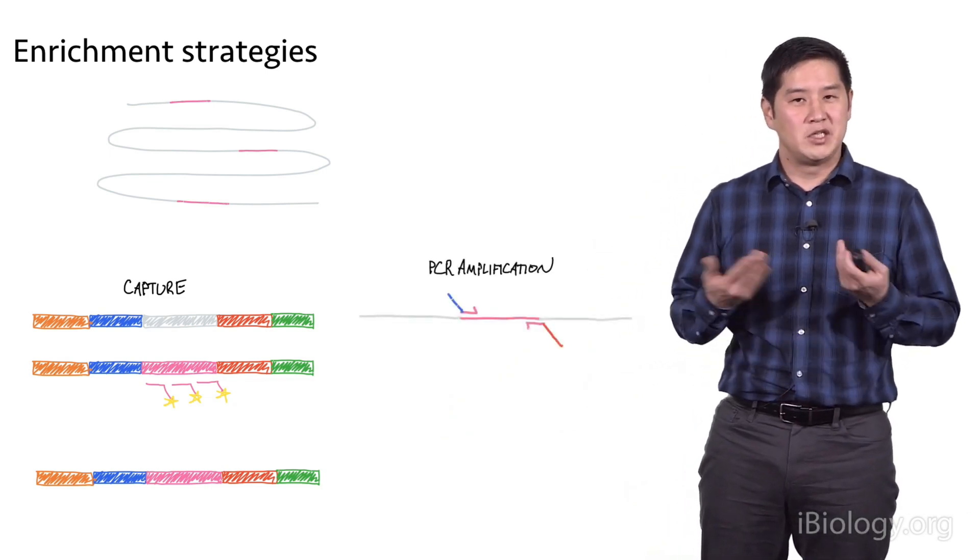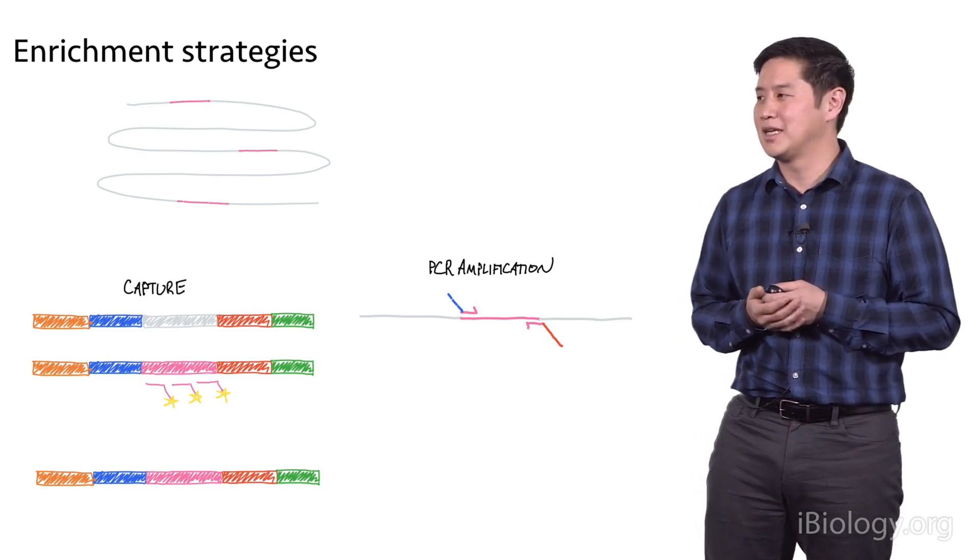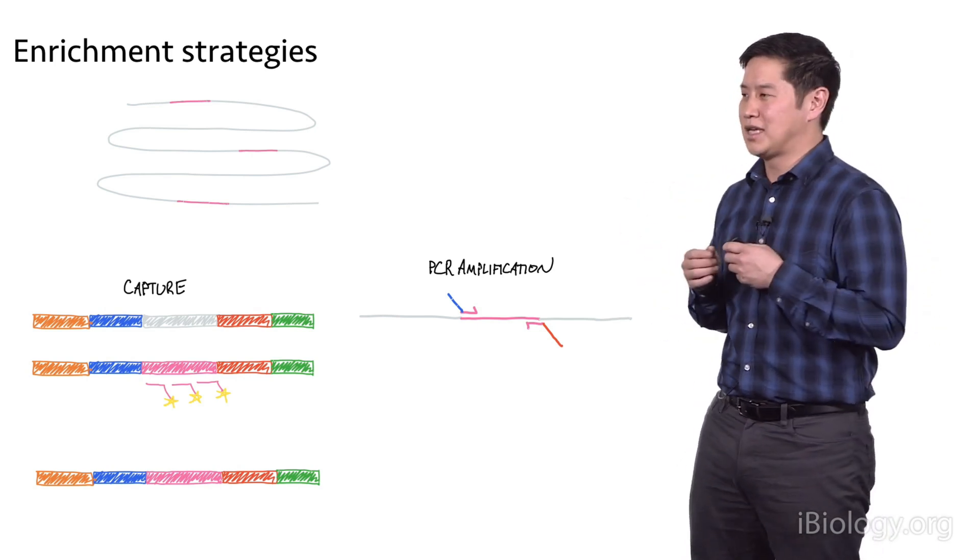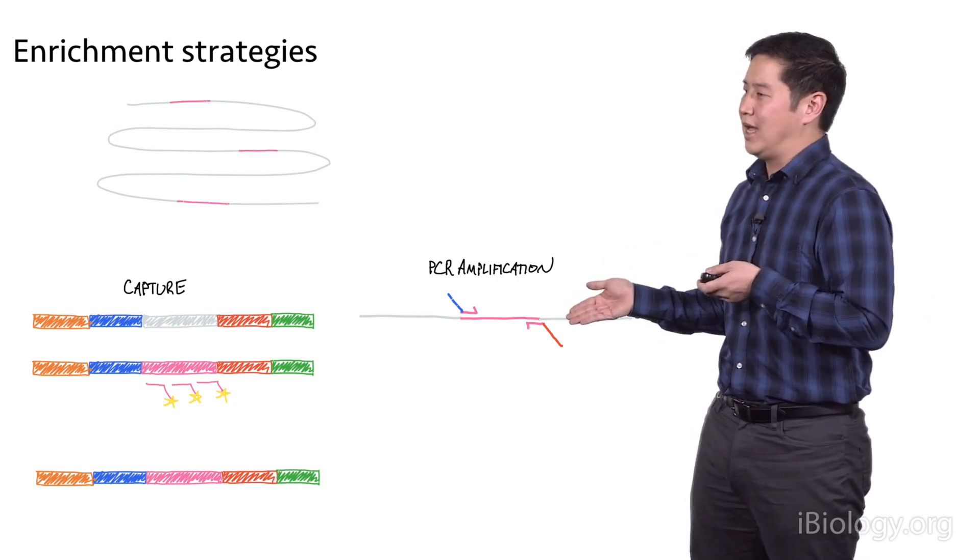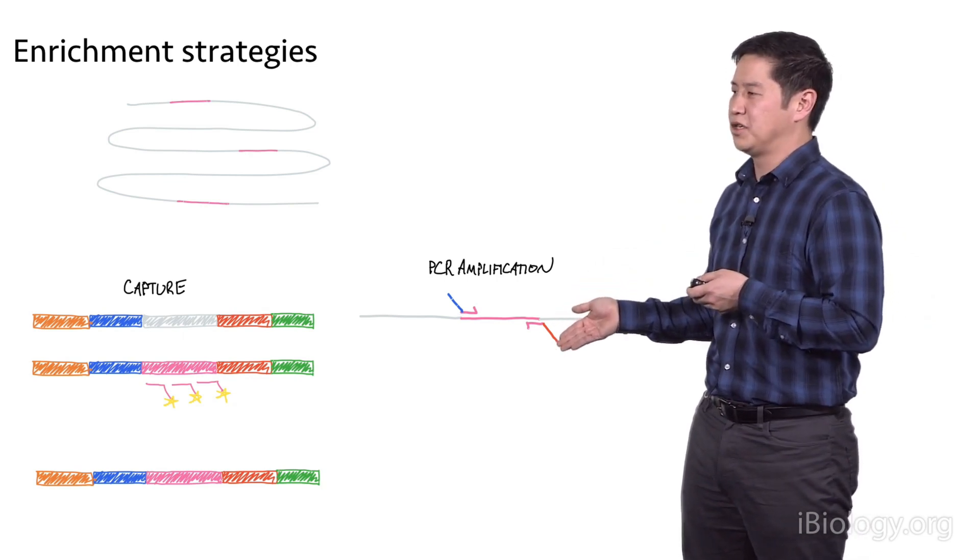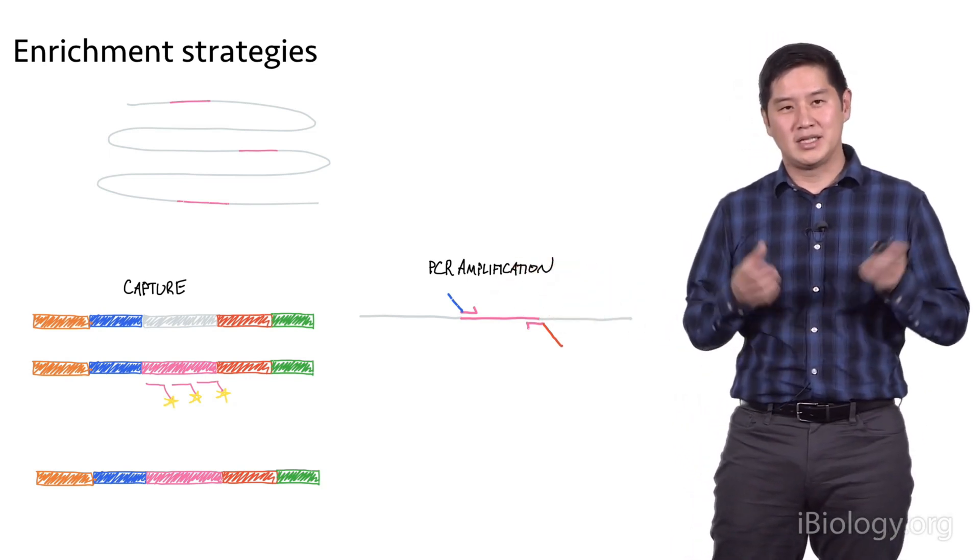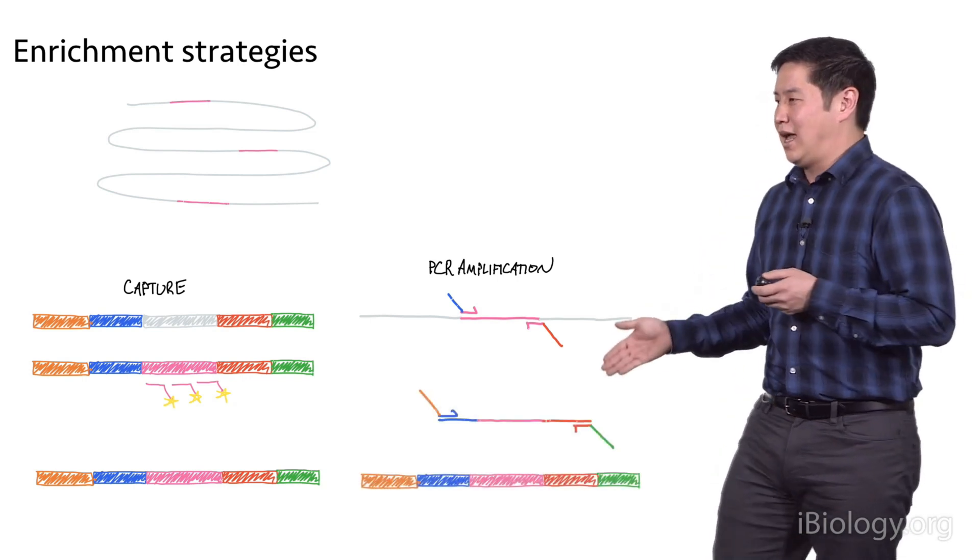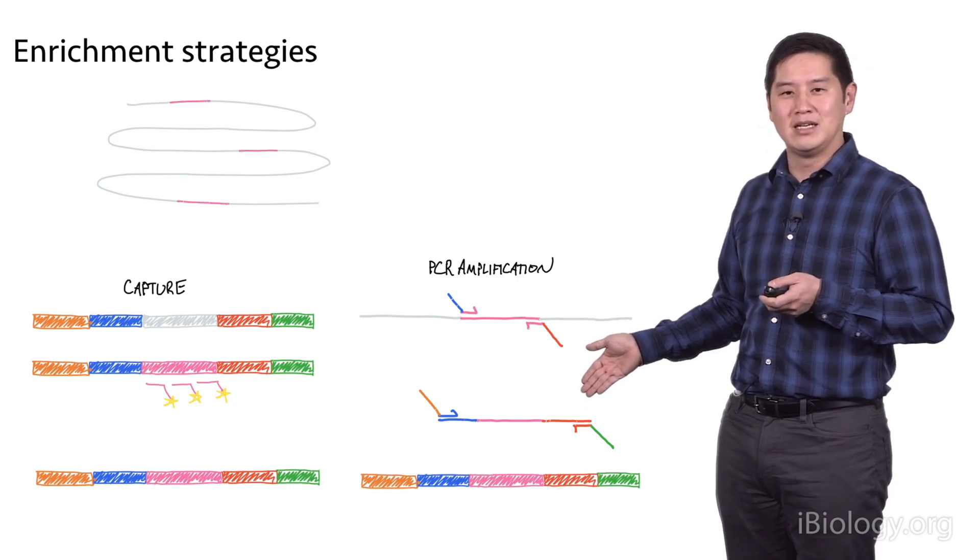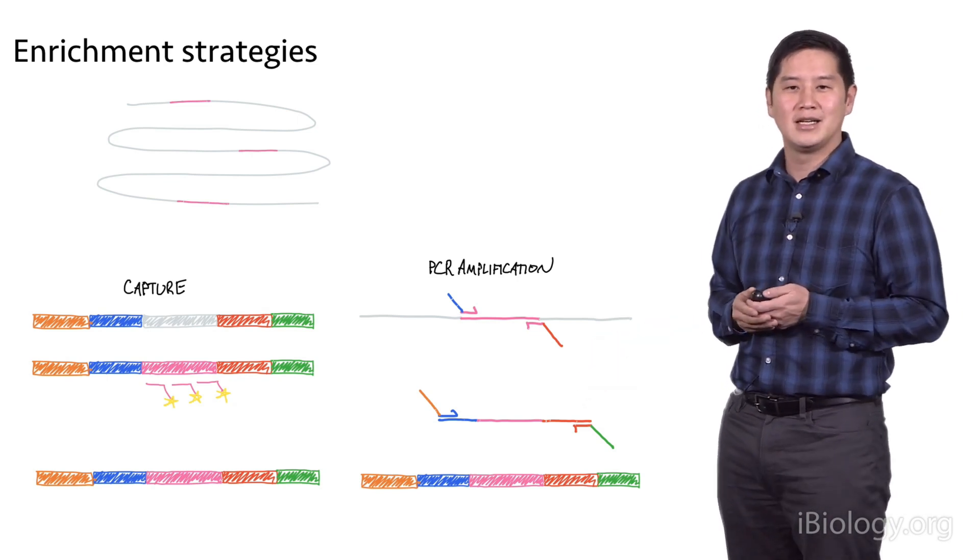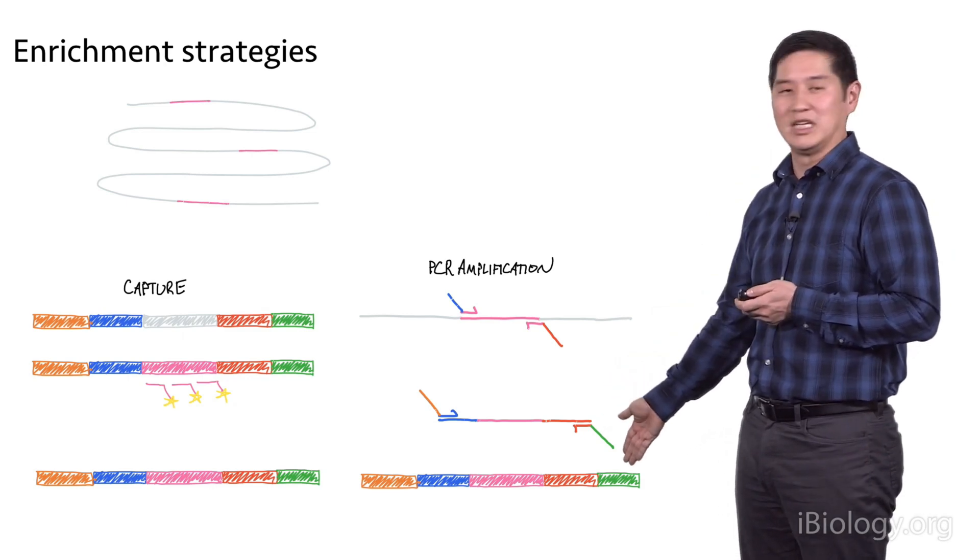A second method is to use PCR amplification using lots of different PCR primers. In this method, you start with your genomic DNA and design primer sets that will amplify up your regions of interest. These primers also have partial Illumina adapters at the end. You undergo a round or several rounds of PCR to amplify up these regions, and you wind up with some enrichment, but you don't have a complete library at that point. What you need to do is a second PCR reaction to add on the final portions of the Illumina adapter to get a sequenceable molecule.